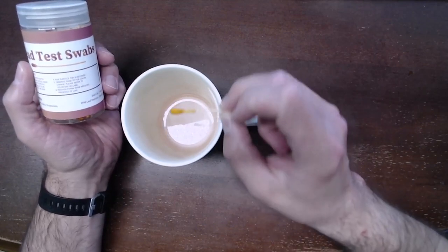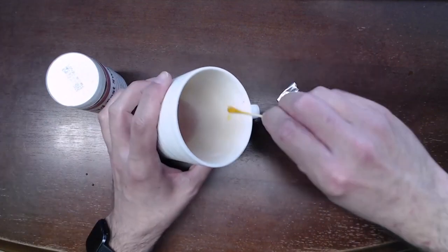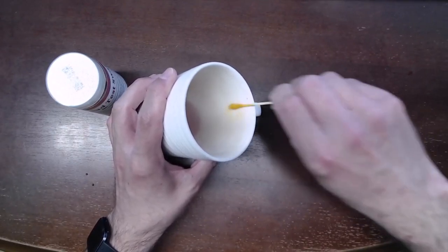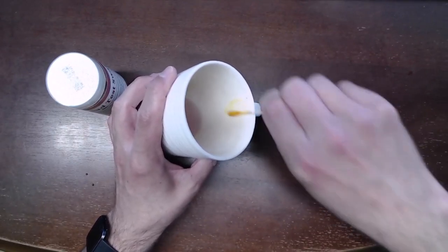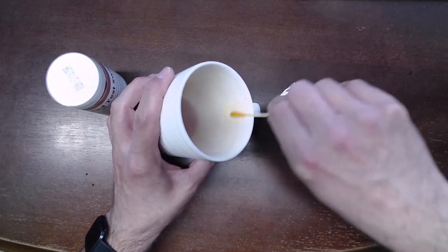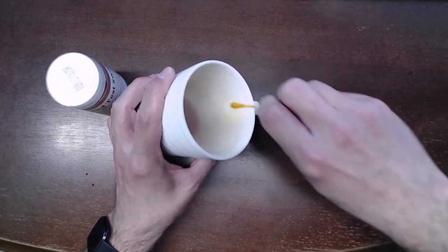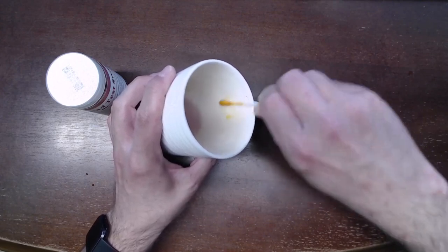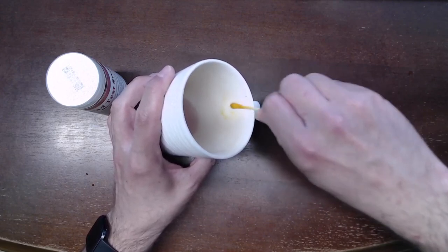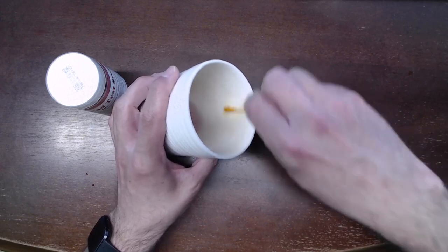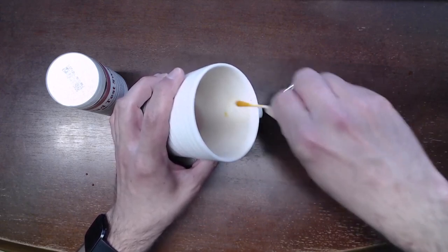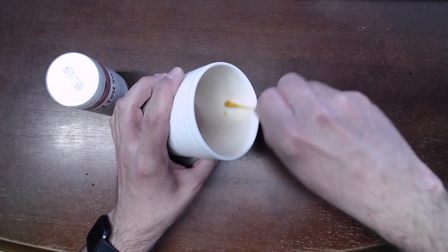We rub it for 30 seconds and then we look for a color change. So I'm going to just go right here and rub this and we'll do this for the 30 seconds. You can see the yellow kind of on the cup right now.